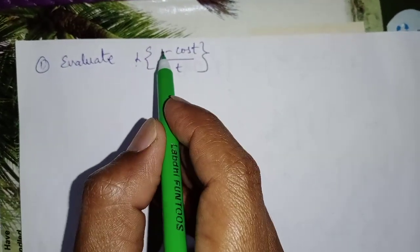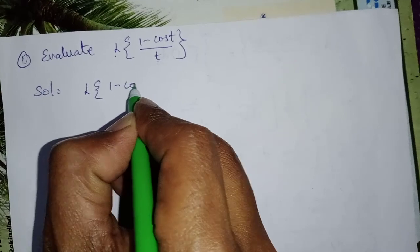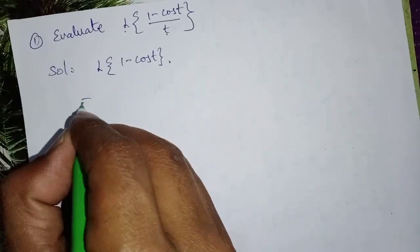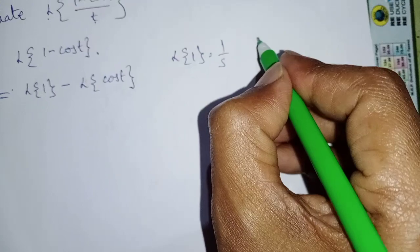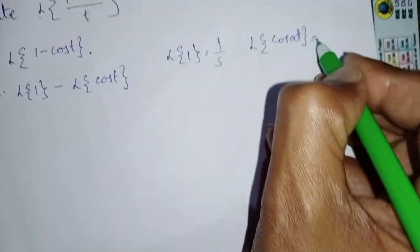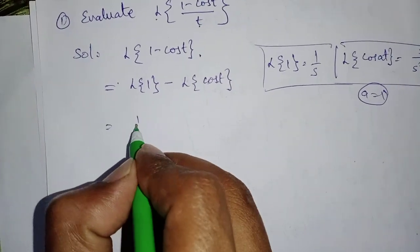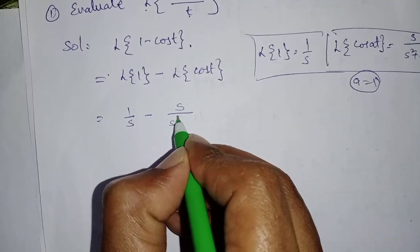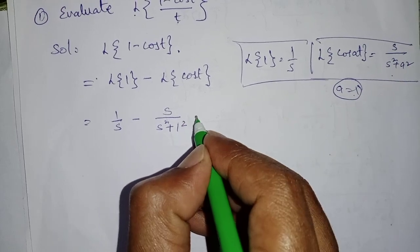Evaluate L{(1 - cos t)/t}. First, consider L{1 - cos t}. Split the Laplace: L{1} - L{cos t}. We know L{1} = 1/s, and L{cos(at)} = s/(s² + a²). Comparing, it is cos(1·t), so a = 1. Therefore F̄(s) = 1/s - s/(s² + 1).